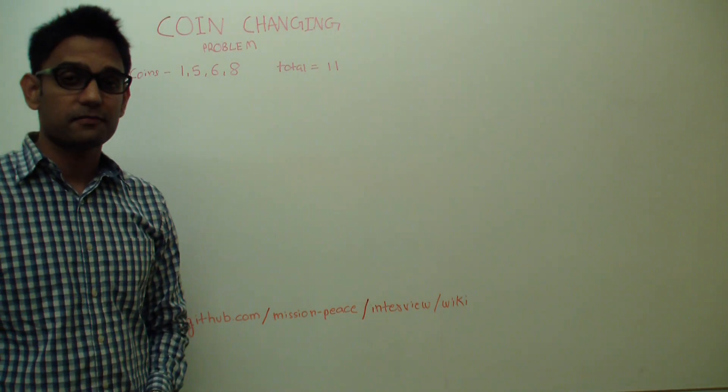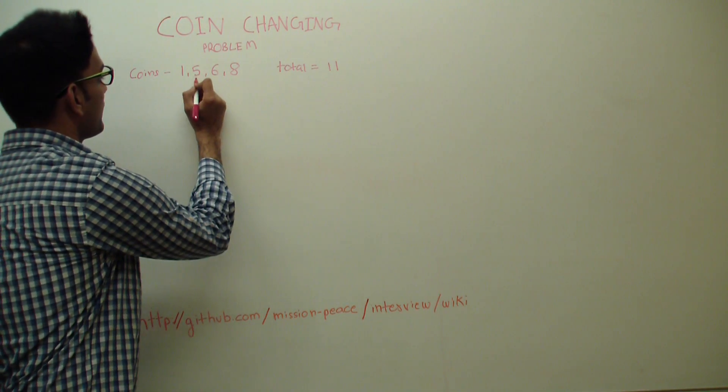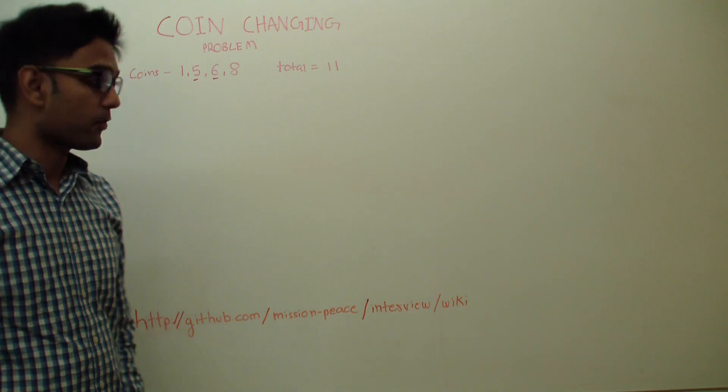Assuming that there is infinite supply of coins. So in this case it would take 2 coins to get 11, 5 and 6. So how do we solve this? Using dynamic programming.